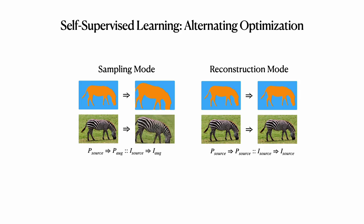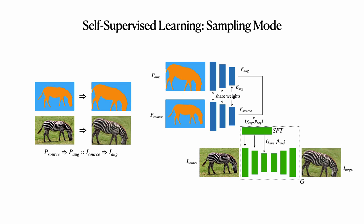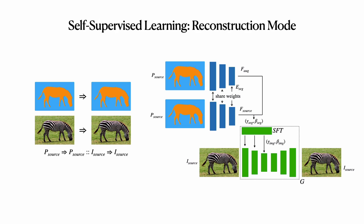In the reconstruction mode, the model learns to reconstruct the source image. Specifically, P-source and P-AG are fed into the same encoder E-SEG to extract features F-source and F-AG respectively. After that, the SFT module predicts the transformation parameters gamma-image and beta-image in the image domain from extracted feature tensors F-source and F-AG. Finally, the generator G maps I-source into I-target under the guidance of gamma-image and beta-image. In the reconstruction mode, we set P-source and P-AG to be the same, and the generator learns to reconstruct the source image.